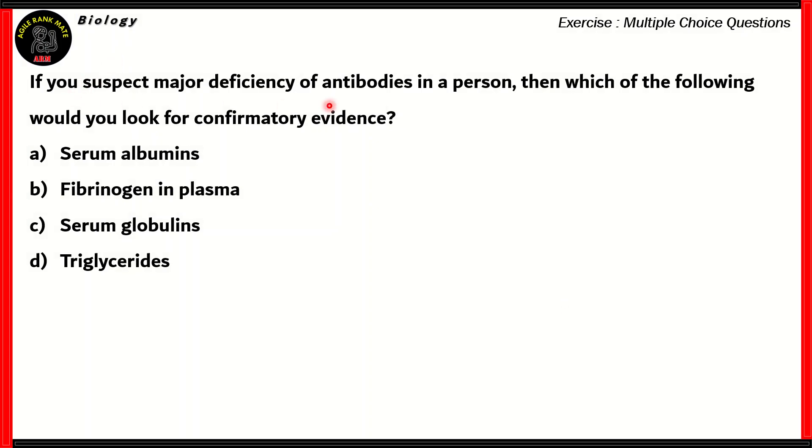If you suspect major deficiency of antibodies in a person, then which of the following would you look for confirmatory evidence? Serum albumins, fibrinogen in plasma, serum globulins, or triglycerides. So, how do we solve this question?